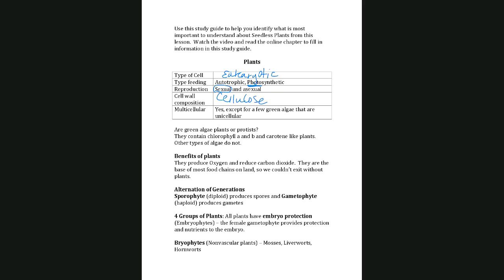Plants are mostly multicellular, except for a few green algae that are unicellular. We focus on four groups of plants. The question of whether green algae are plants or protists is addressed by the fact that they have both chlorophyll a and chlorophyll b, plus a pigment called carotene — which makes carrots and sweet potatoes orange. Other types of algae covered in the protist chapter don't have those particular pigments.